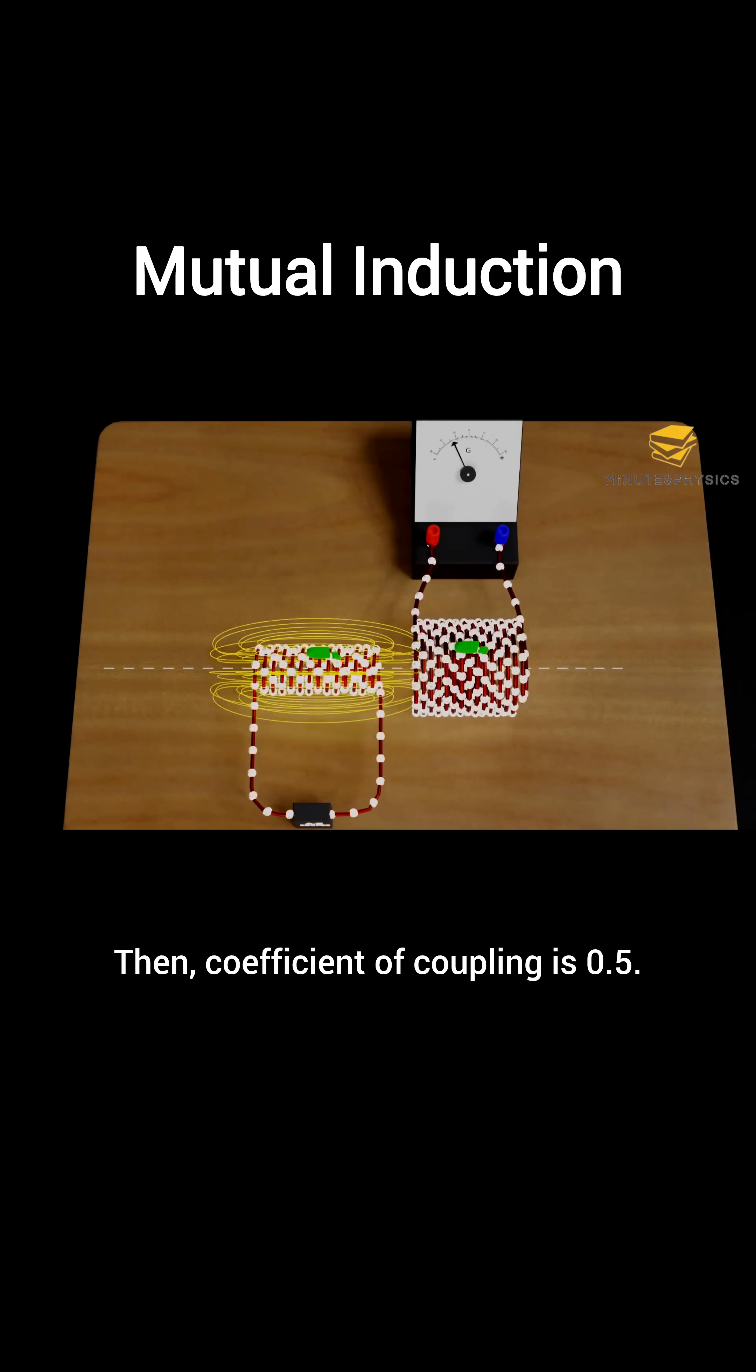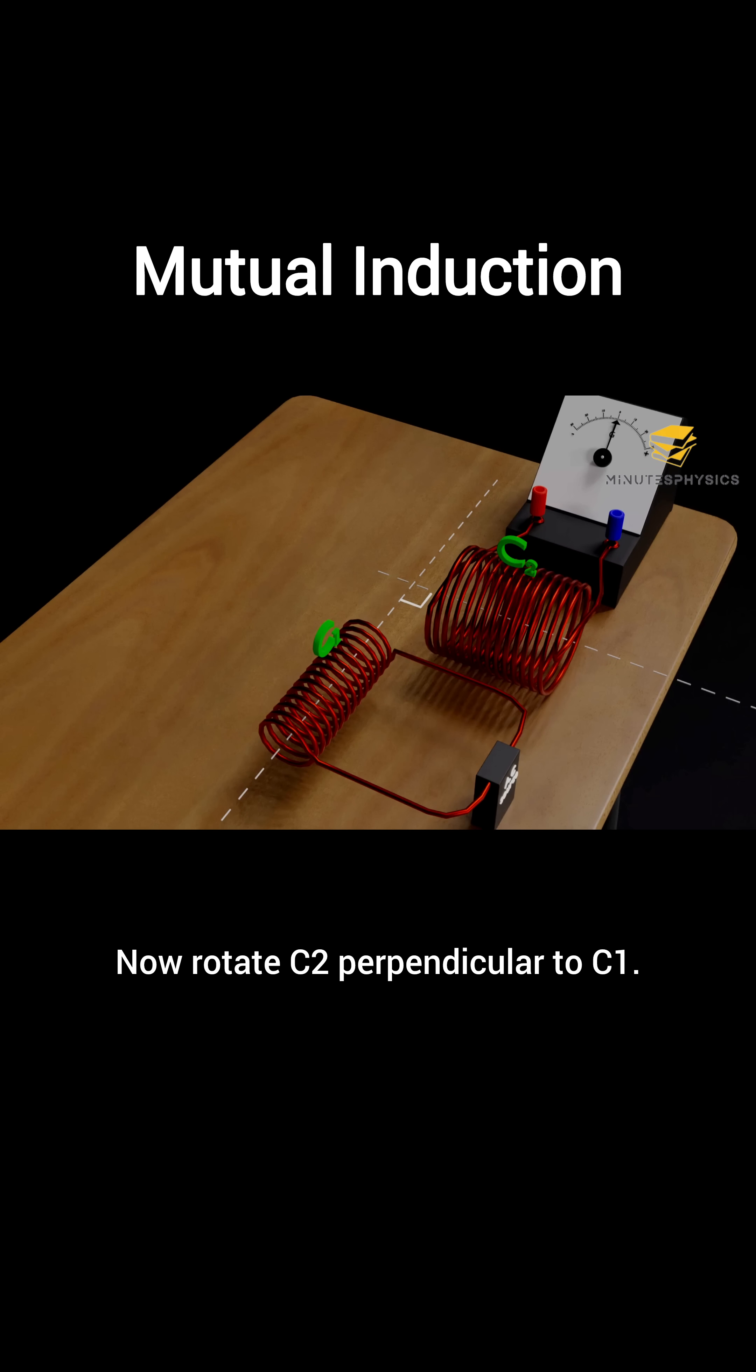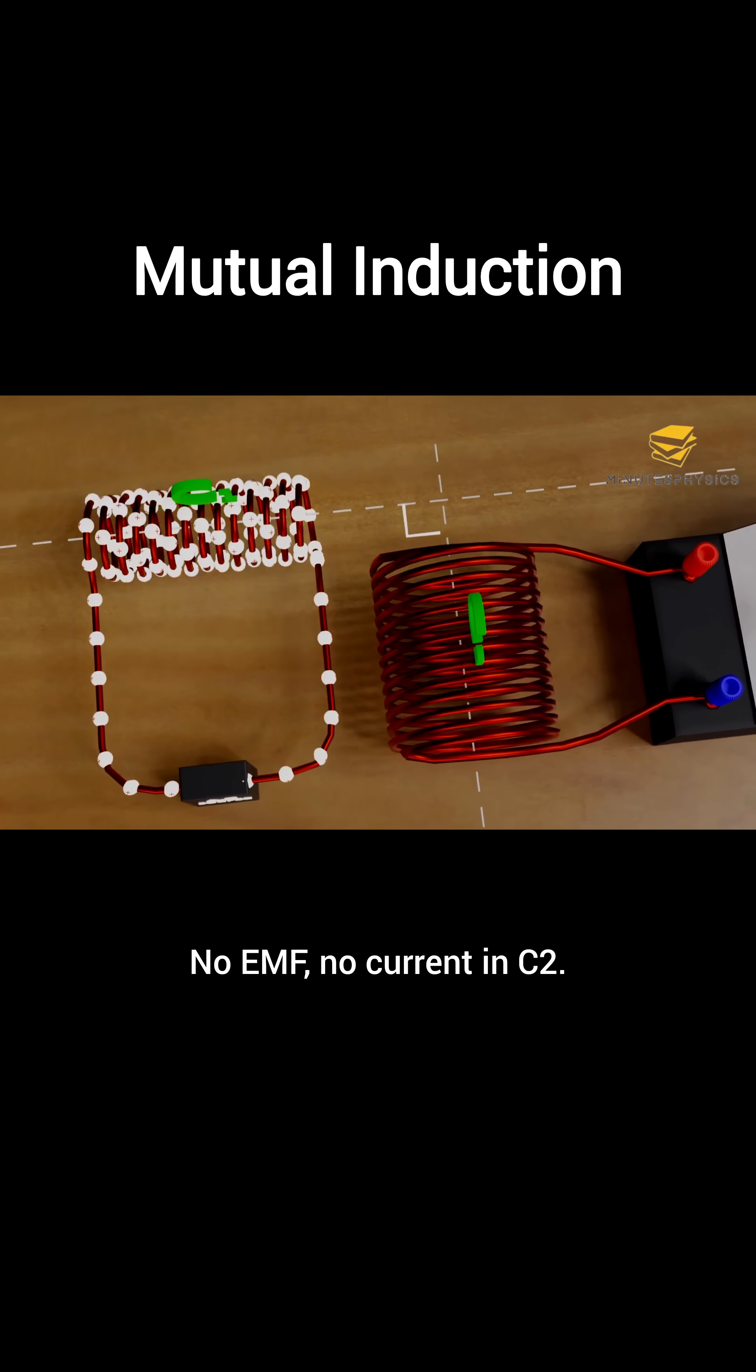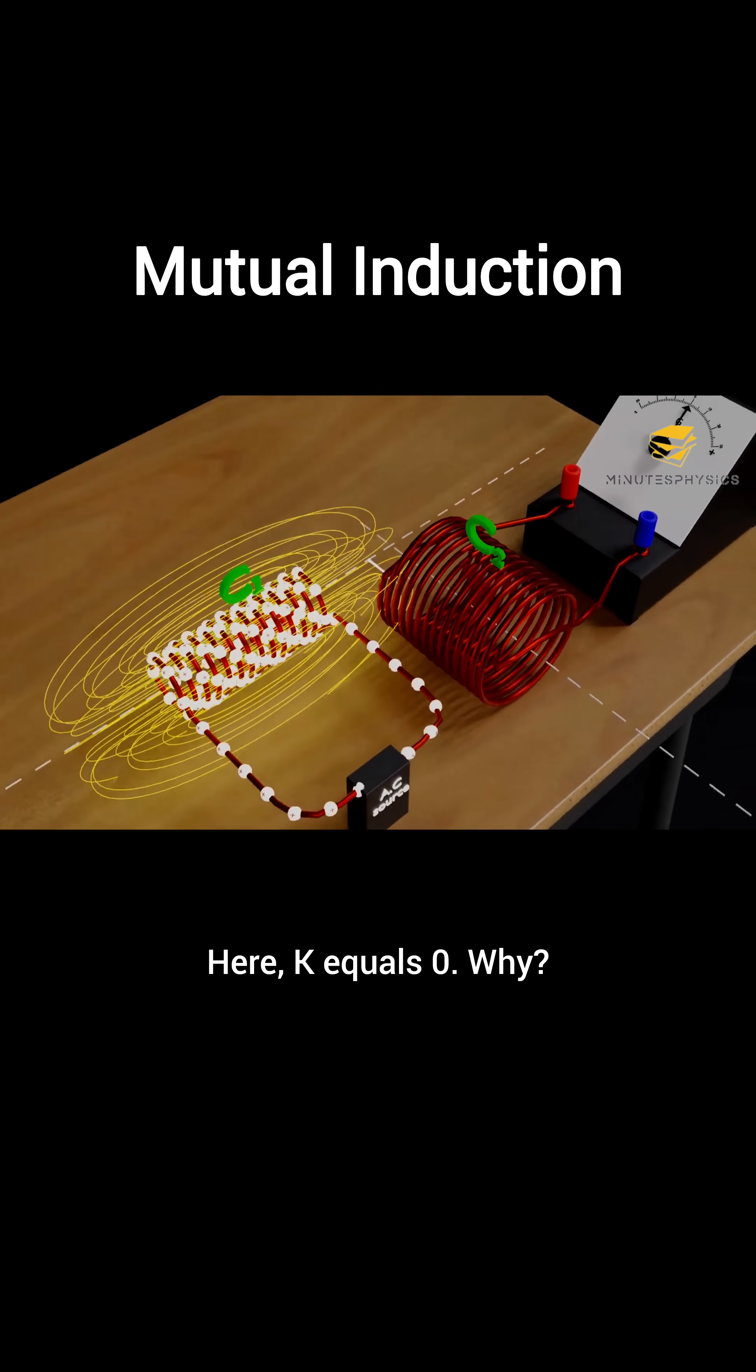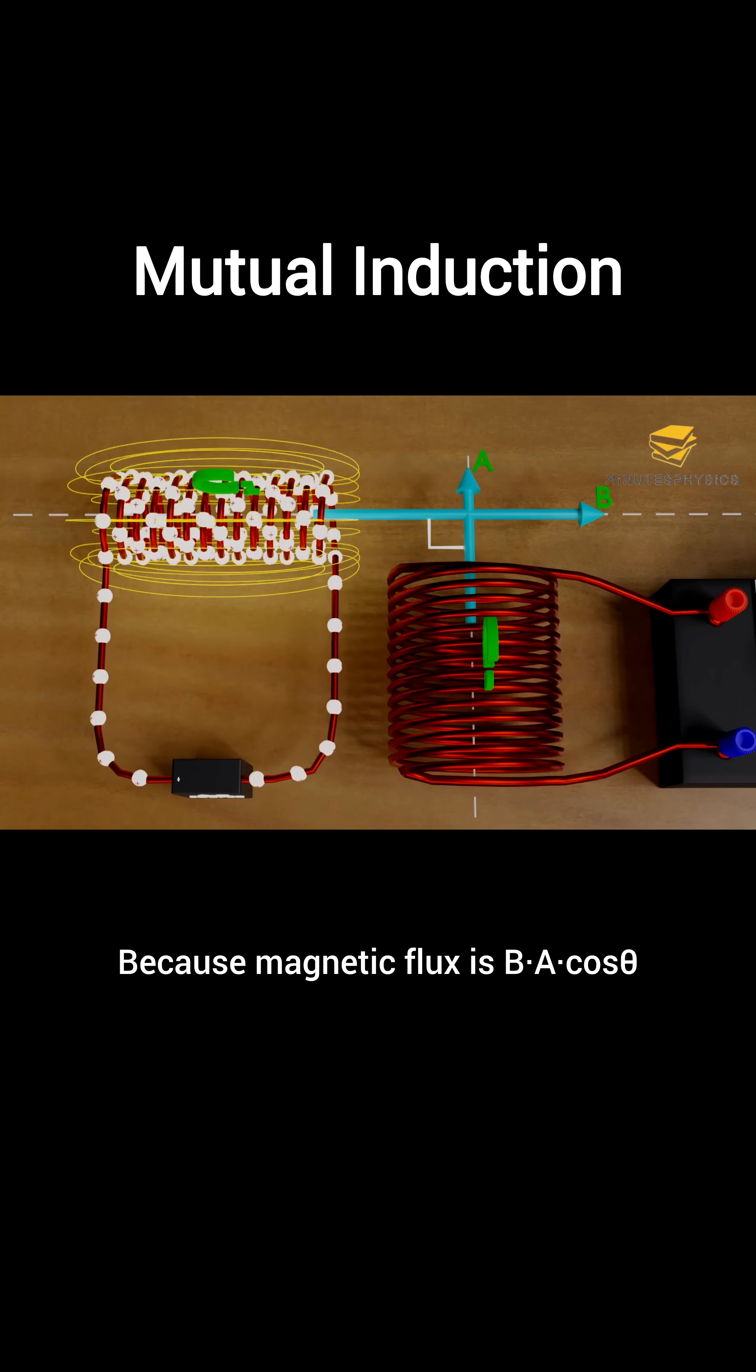Now rotate C2 perpendicular to C1. Will more flux link now? Nope. In fact, none does. No EMF, no current in C2. Here k equals zero. Why? Because magnetic flux is BA cos theta, and if angle theta is 90 degrees, cos 90 degrees is zero, so no flux is linked.